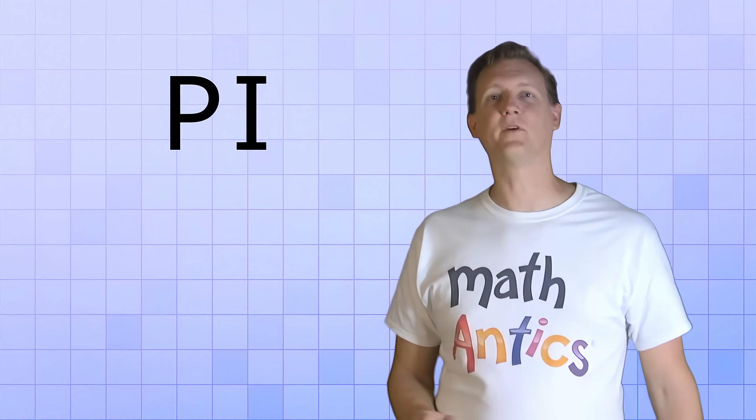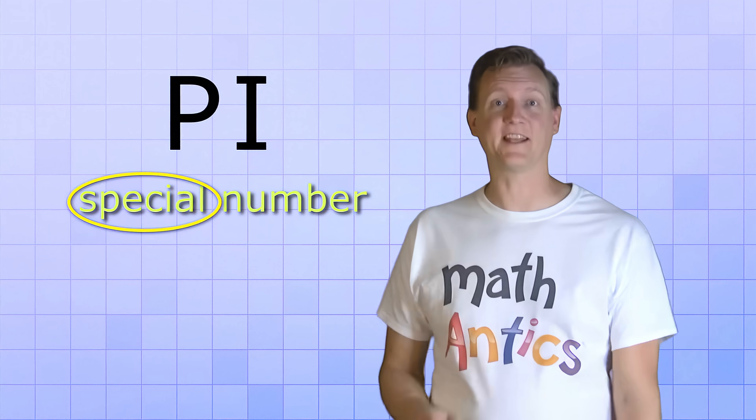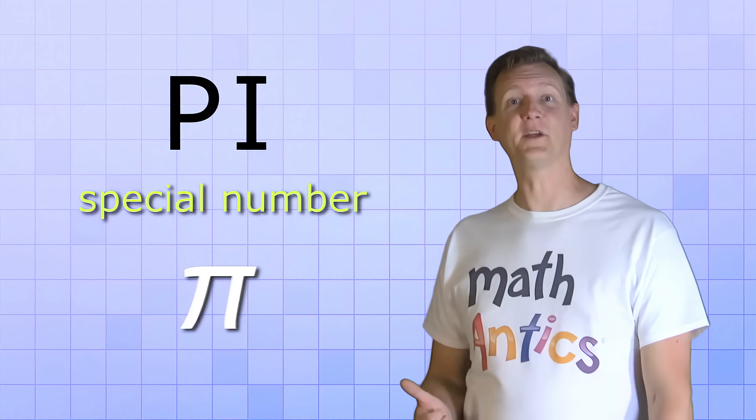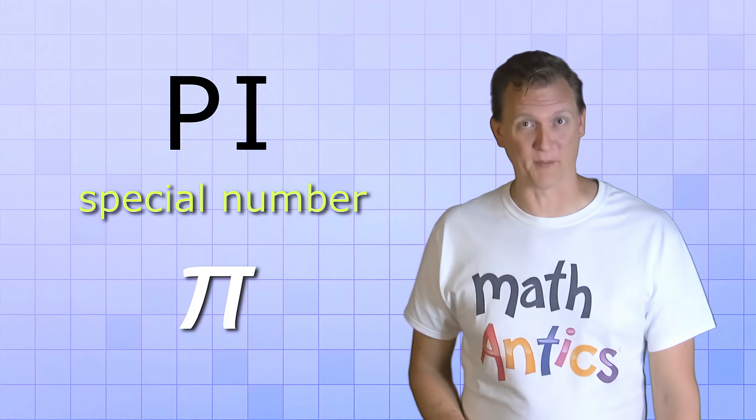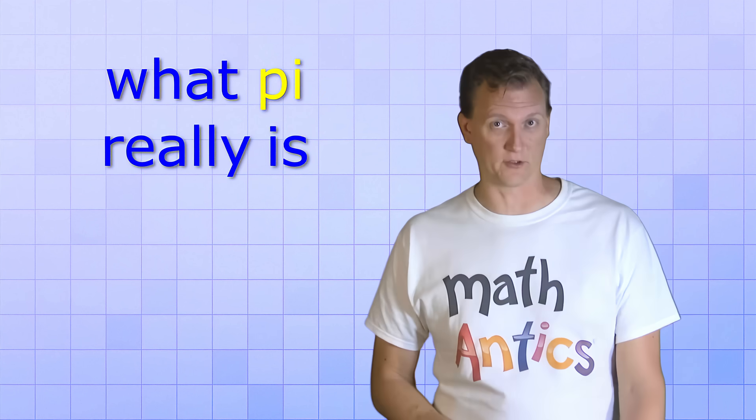In math, the word Pi, which is spelled P-I, refers to a very special number. In fact, it's so special that it gets its own symbol. This Greek letter here is the symbol for the number Pi. But if Pi is just a number, why don't we write it like that? Why do we need to use a special symbol for it? That's a good question, and I'll get to that in just a minute.